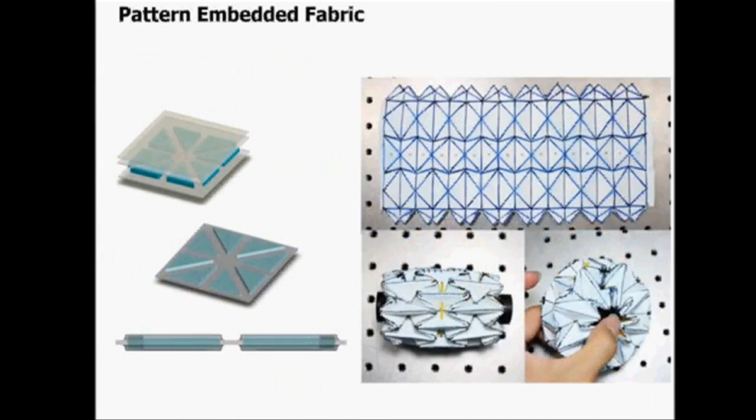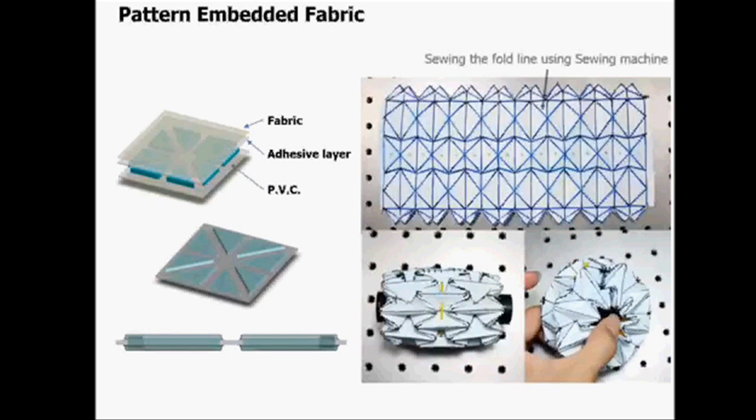In fabrication of the wheel, we designed pattern-embedded fabric for making a robust but foldable structure. This structure is composed of fabric, adhesive layer, and PVC segments. And we enclosed the PVC segment with fabric, and the stitches are sewn around them so we can achieve tough and foldable structure.